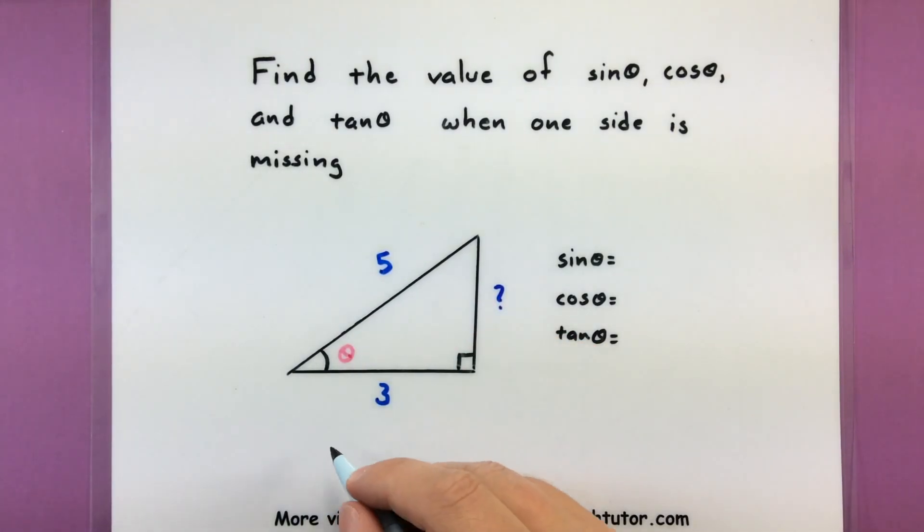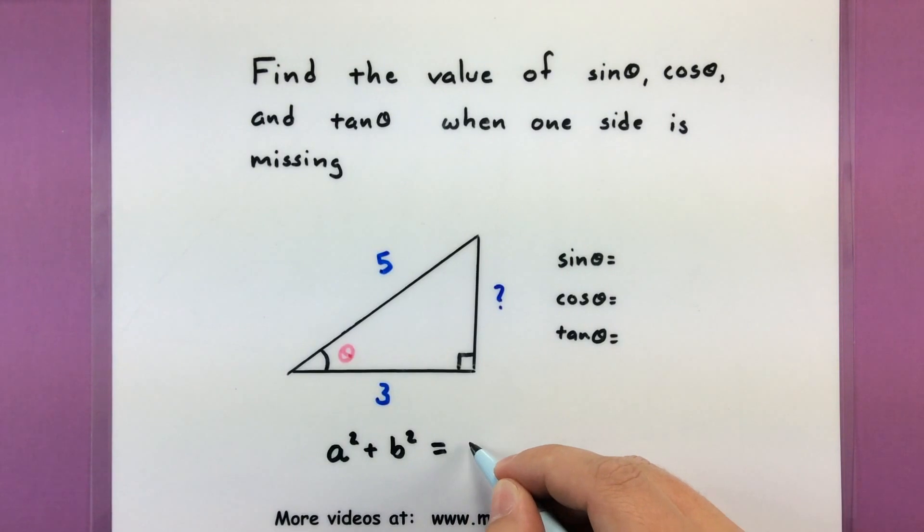If you have a right triangle, you can take the legs of the right triangle, let's call them A and B, square them, add them together, and it will equal the hypotenuse of the right triangle squared. Or more commonly people remember A squared plus B squared equals C squared, where the A and B are the legs of the right triangle.